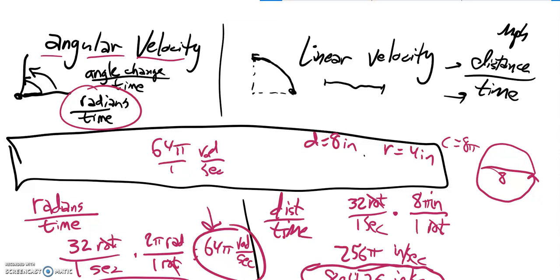If I know the angular velocity, notice it's 64 pi over 1 radians per second. If I know the angular velocity and I want the linear velocity, this is how many radians it's gone through. So what I can do is I can multiply that by the radius.